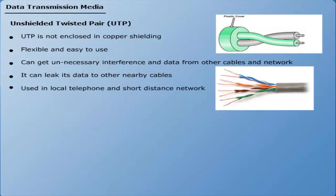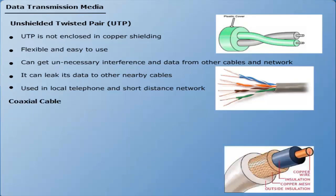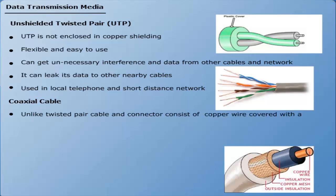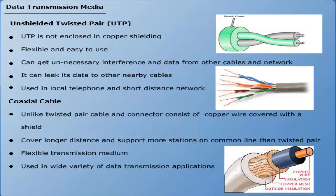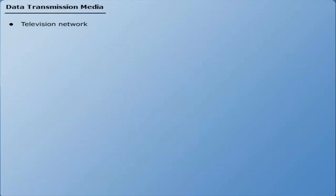Coaxial cable, unlike twisted pair, comprises one conductor — one copper wire covered with a shield. Coaxial cable can be used over longer distances and supports more stations on a common line than twisted pair. It is one of the most common types of flexible transmission media. Due to its flexibility, it is used in a wide variety of data transmission applications, including television networks, long-distance telephone communication, and local area networks.